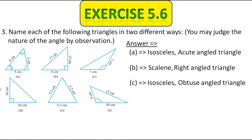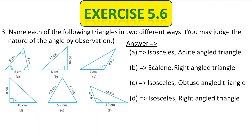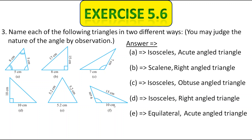Next, two sides are of equal length so it is isosceles, and one angle is equal to 90 degrees, therefore it is also a right angle triangle. Next, all three sides are of equal length so it is equilateral, and all angles are less than 90 degrees so it is also acute angle. Next, all three sides are of different length so it is scalene, and one angle is greater than 90 degrees, so it is also an obtuse angle triangle.